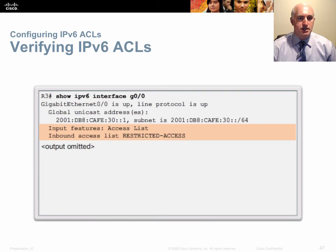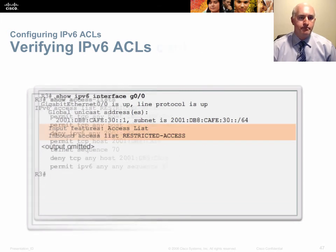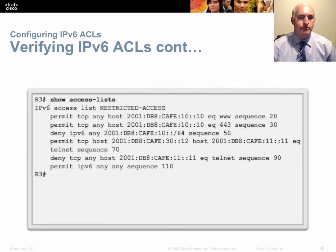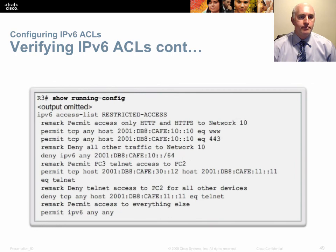To verify IPv6 ACLs, use the same commands but add IPv6: 'show ipv6 interface g0/0' to see if any IPv6 lists are applied. Type 'show access-lists' and it will show both your IPv4 and IPv6 access lists. They also appear in your running config.